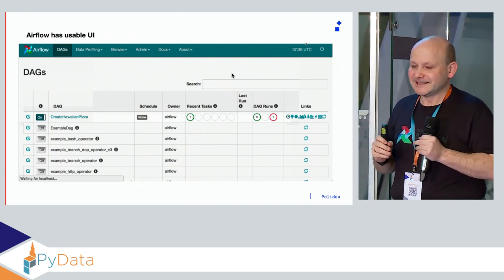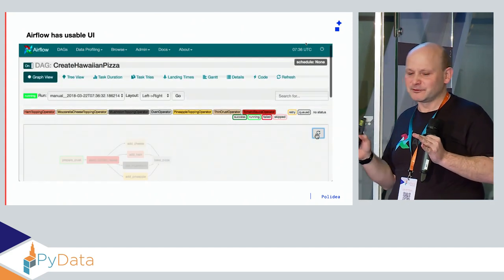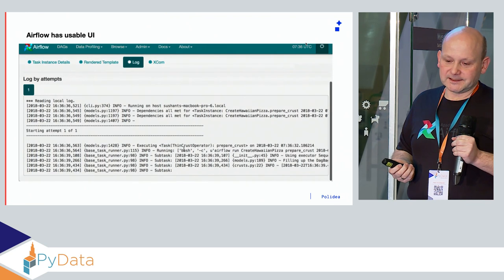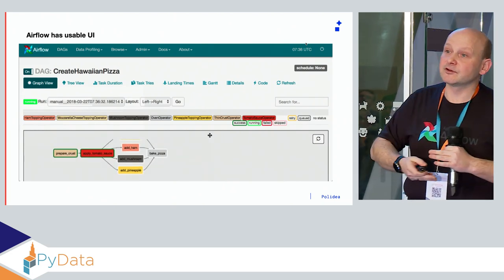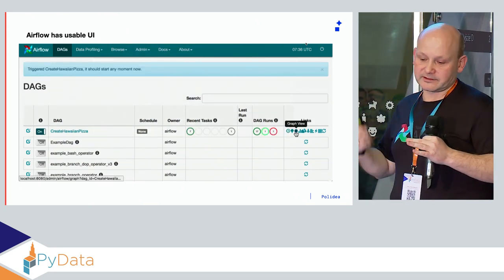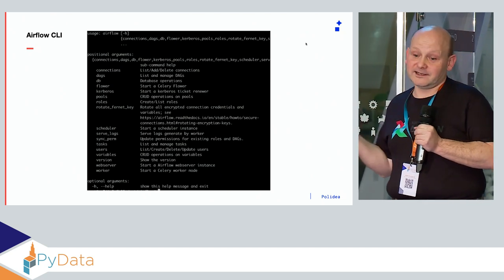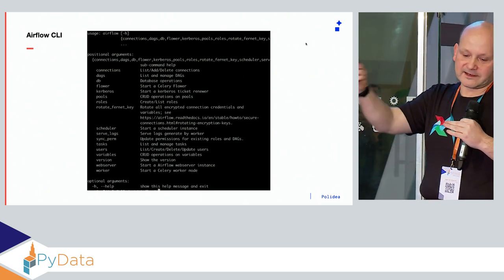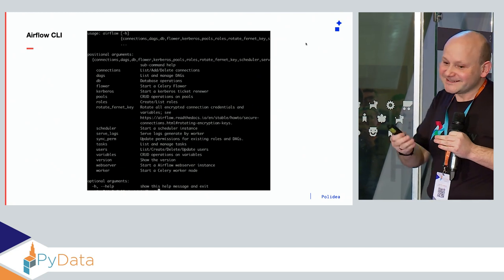Airflow has a UI. Maybe it's not the most modern, but it works. You can monitor and check what's going on with your workflows in production. Even with hundreds or thousands of them, you can rerun tasks, check logs, and see status from the UI. Airflow also has a CLI, so you can interface with it via command line — listing tasks, finding tasks, et cetera. Good for developers who prefer not to use the web UI.